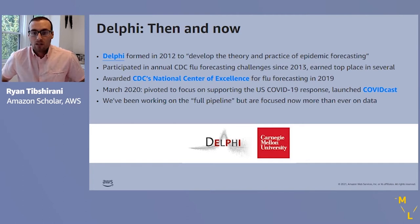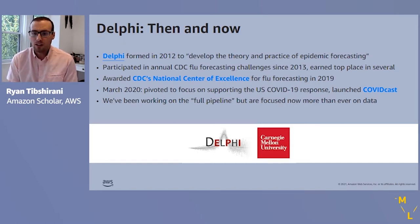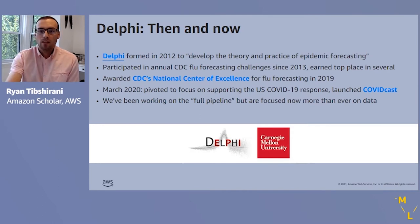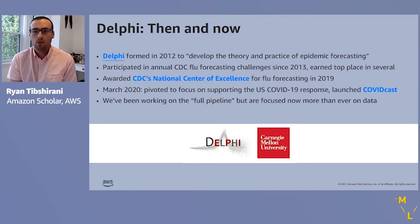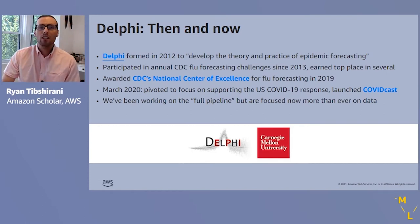The Delphi Group formed in 2012. It was founded by Roni Rosenfeld, a professor in the machine learning department at Carnegie Mellon University, and myself, to develop the theory and practice of epidemic forecasting. Every year since then, we participated in the annual CDC flu forecasting challenges and earned top marks for many of the years between 2013 and 2019. In 2019, we were awarded one of two national centers of excellence for flu forecasting by the CDC, which solidified our relationship with them.